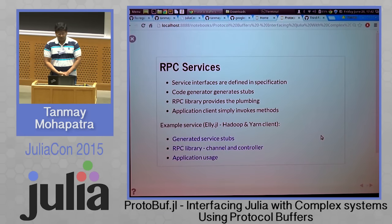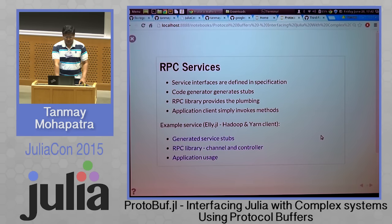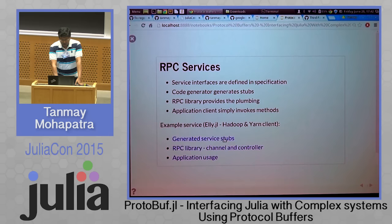Protobuf also has support for RPC services. Service interfaces are defined in the specification and the code generator then generates stubs for them. There needs to be an RPC library which you provide, but that can be a standard RPC library to provide the plumbing. As long as these three pieces are in place, the application's client just needs to call the method as any other local method. We have used this in a package called le.jl, which is a Hadoop and Yarn client.